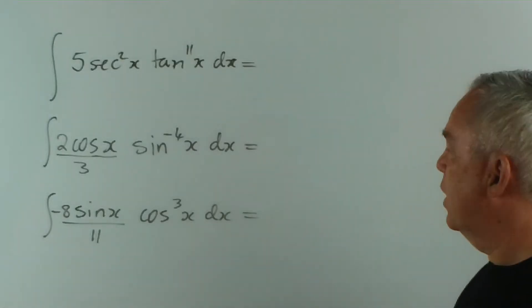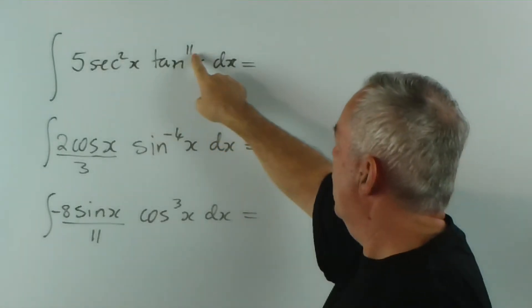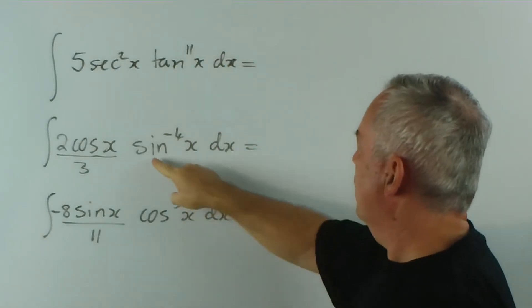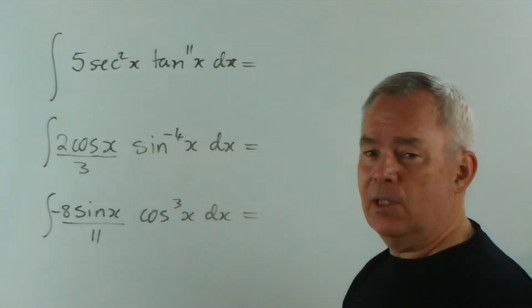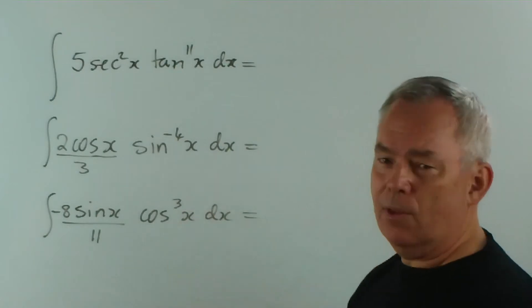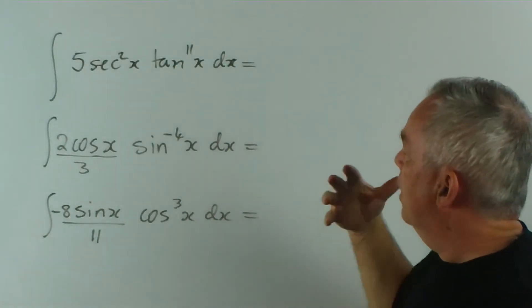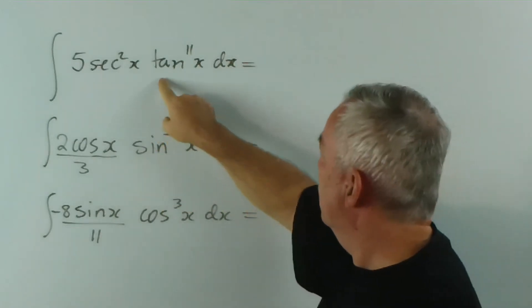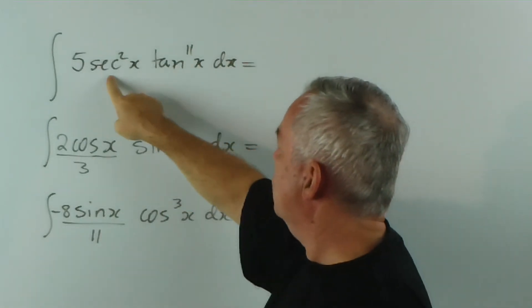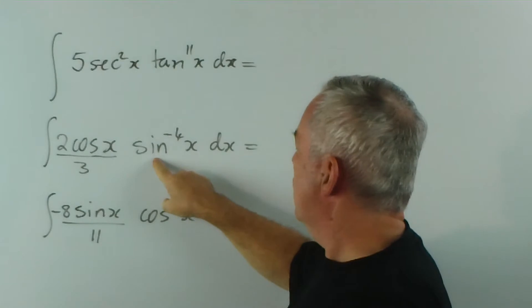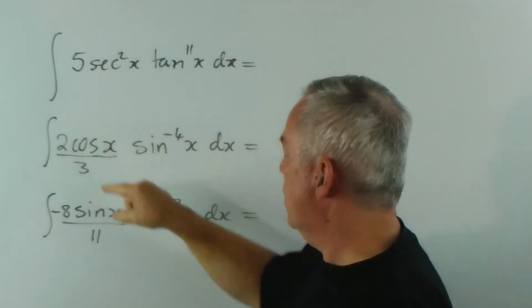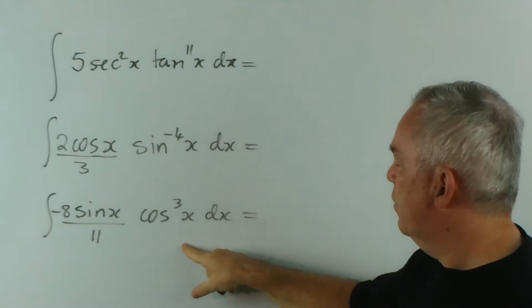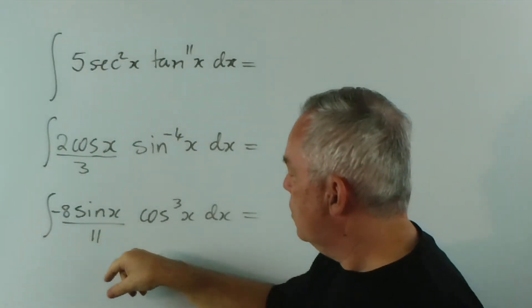So here I have three functions. You can see one of them is tan x to the power 11, a sine x to the power minus 4, and a cos x to the power 3. We're going to integrate these, but notice all of them follow the pattern. The derivative of tan x is sec squared x. The derivative of sine x is cos x, and there's a cos x here. And the derivative of cos x is minus sine x.